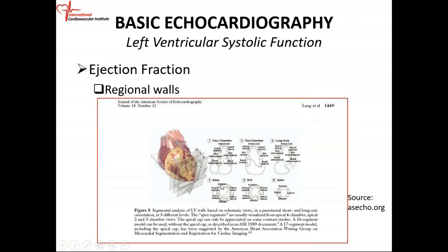So at the base, you have six segments — we call them also regional walls. Six segments at mid-cavity, six segments. And at the apex, four.